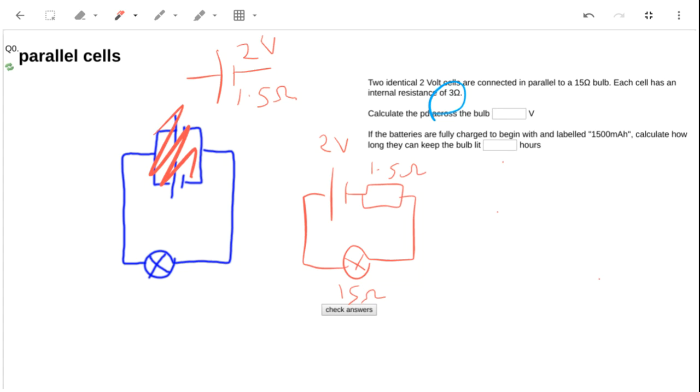I suppose it's using a ratios approach. It would be the resistance of the bulb over the total resistance times the total EMF, and that's going to be 15 divided by 16.5 times 2, that's going to be 1.82.